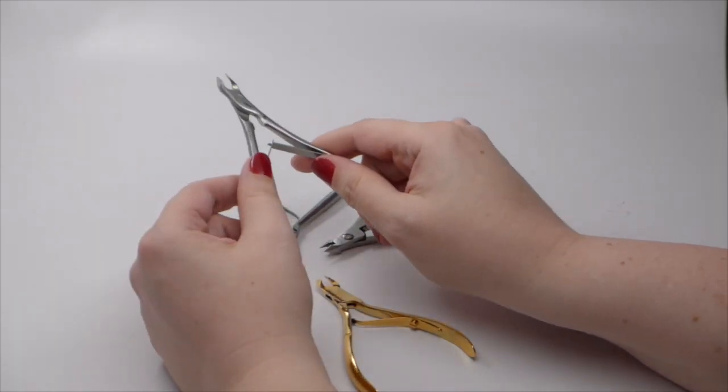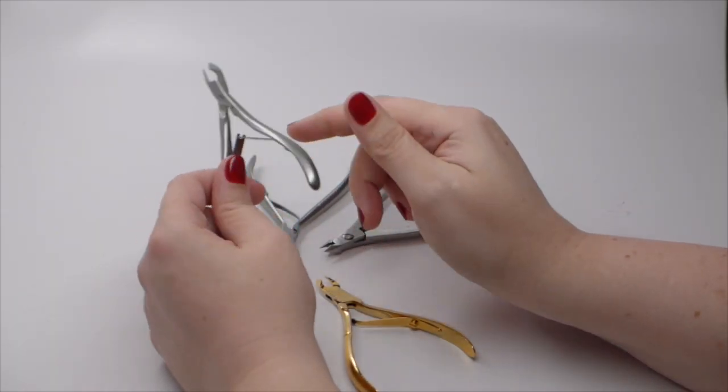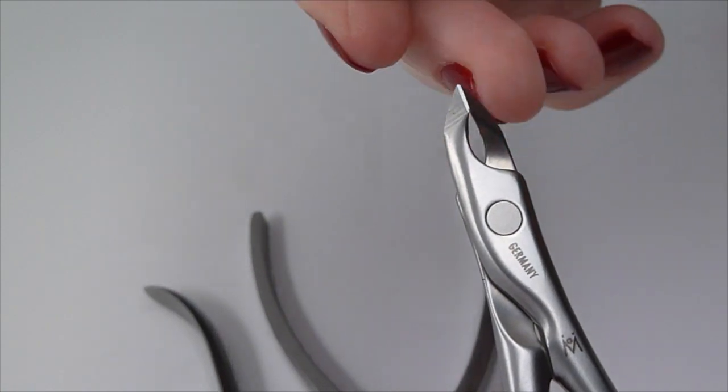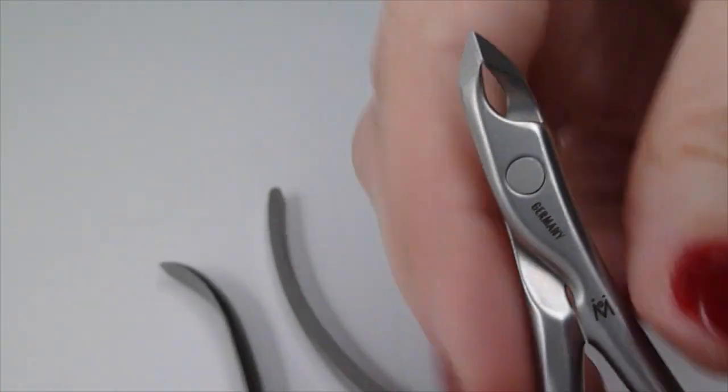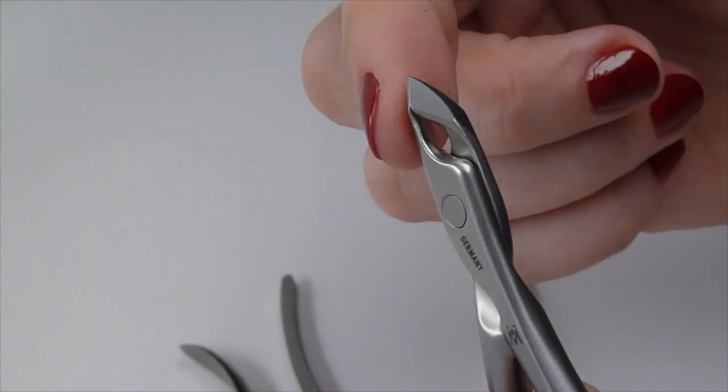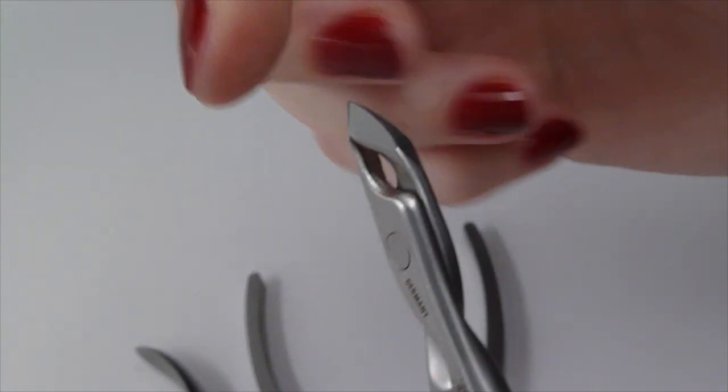There are other things to consider with a cuticle nipper, such as the point. You need to check that for problems like burrs. Check the edge for issues like chips and snags.